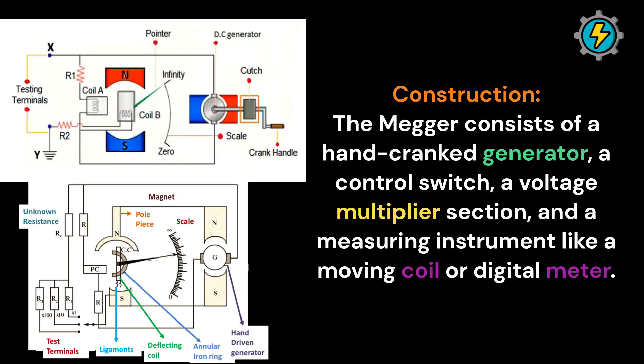Construction: The MEGAR consists of a hand-cranked generator, a control switch, a voltage multiplier section, and a measuring instrument like a moving coil or digital meter.